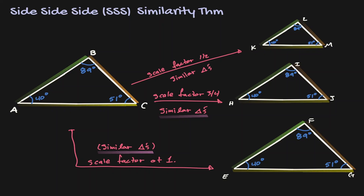Let's copy another triangle ABC, but now let's shrink it by a scale factor of 1 quarter. Let's call this triangle OPQ. We took triangle ABC and multiplied by a scale factor of 1 quarter. Notice that the measurement of the interior angles did not change, and because all sides were multiplied by the same factor, the sides are still in proportion. AB is proportional to OP by 1 quarter, AC is proportional to OQ by 1 quarter, and BC is proportional to PQ by 1 quarter. Because all angles are congruent and all sides are proportional, we can say that these two triangles are similar to each other.